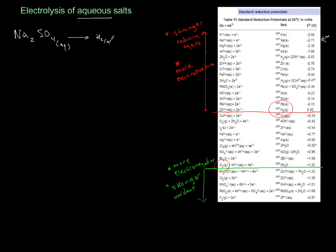So in this case what you are going to produce is hydrogen. And sulfate also never gets a chance to come out. Instead of that you have water which is going to produce oxygen. So in this case you have oxygen and hydrogen being produced.